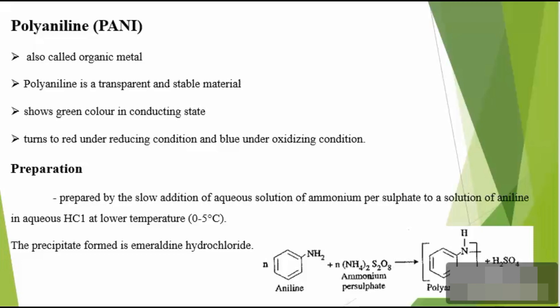Now we are going to discuss the preparation, properties, and applications of two conducting polymers: polyaniline and polypyrrole. Polyaniline is a conjugated polymer, meaning it contains alternate single and double bonds in its polymer backbone. It is also called an organic metal because its conductivity and thermal dependence of conductivity are like those of semi-metals, and all other properties are like those of pure metals.